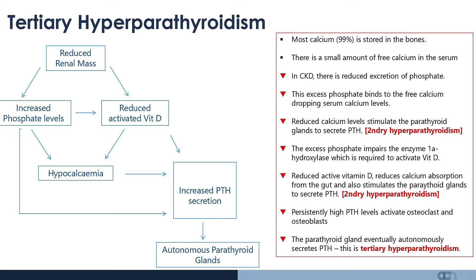The excess phosphate also impairs the enzyme 1-alpha hydroxylase, which is required to activate vitamin D in the kidneys. This reduced activated vitamin D decreases calcium absorption from the gut and further stimulates the parathyroid glands to secrete PTH — again, secondary hyperparathyroidism. This persistent high PTH activates osteoclasts and osteoblasts and causes renal osteodystrophy. Over time, the parathyroid glands become autonomous and secrete PTH autonomously — this is known as tertiary hyperparathyroidism.